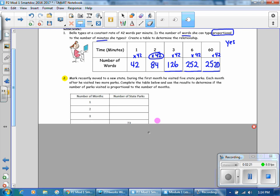In our next example, Mark recently moved to a new state. During the first month, he visited five state parks. So in the first month, he visited five state parks. Each month after, he visited two more parks. Complete the table below and use the results to determine if the number of parks visited is proportional to the number of months. In other words, did he visit the same amount of state parks per month?